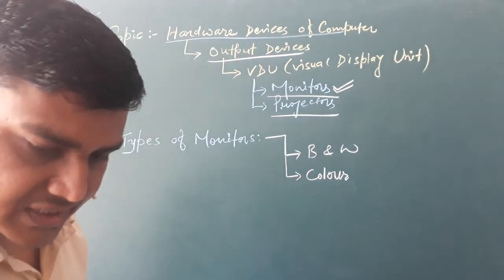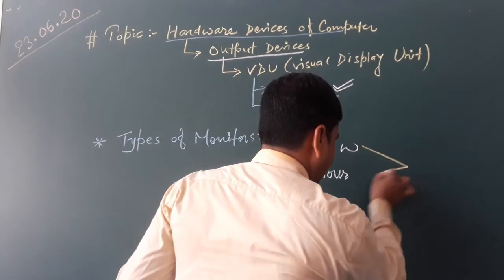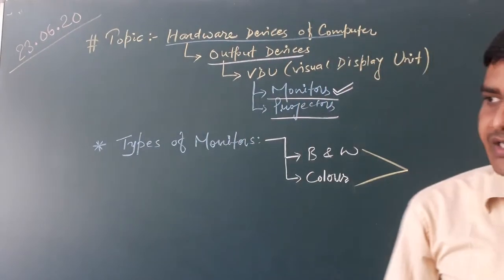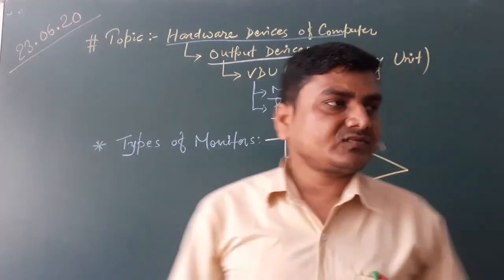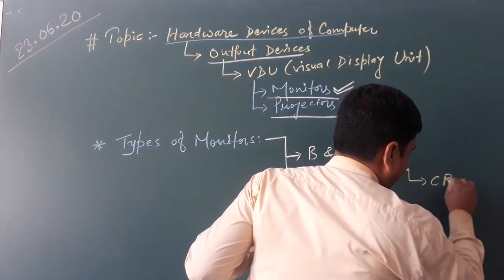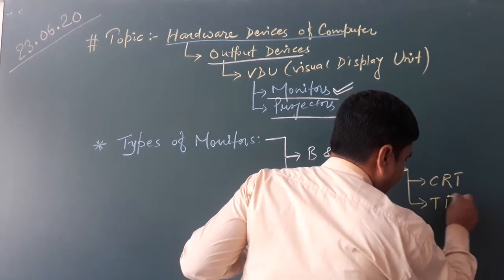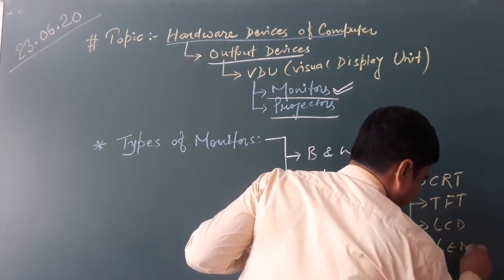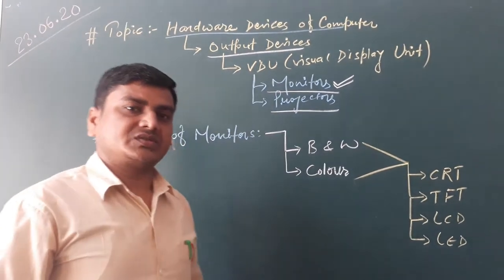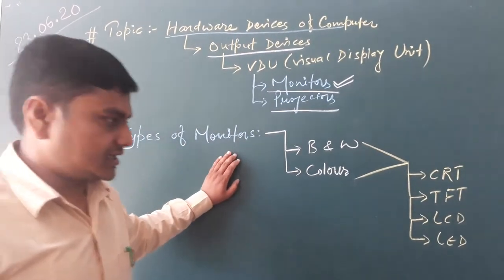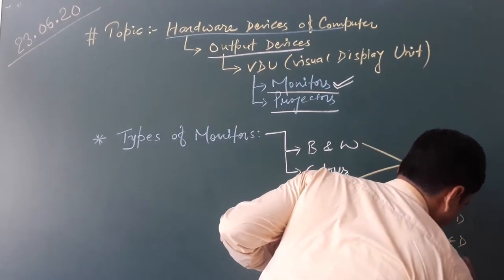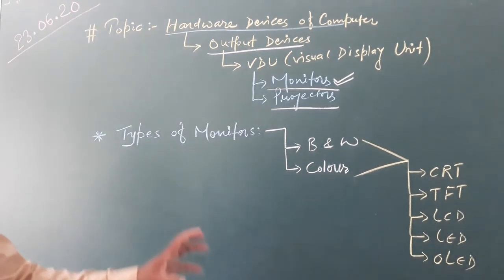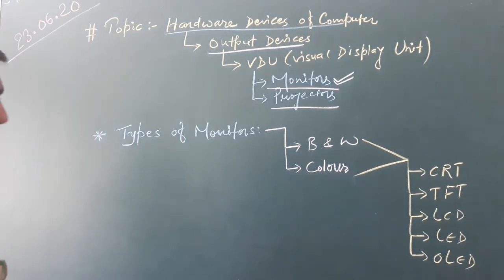You might have gone through some books where monitors are explained and categorized in different ways. Like, according to some authors, types of monitors include CRT, TFT, LCD, LED, and the latest technology that we are using today — OLED. We will have a brief explanation about all of these.